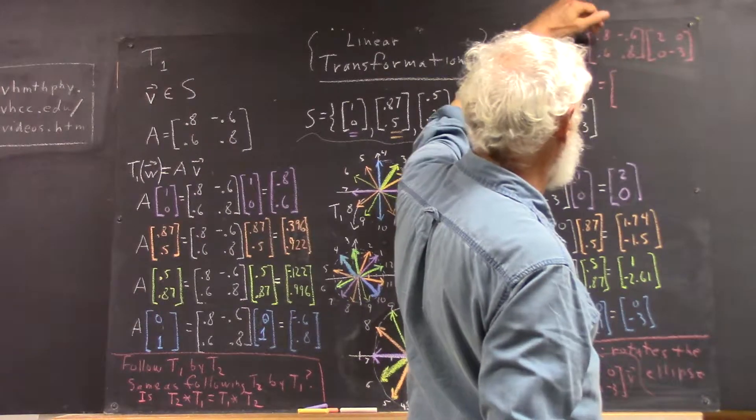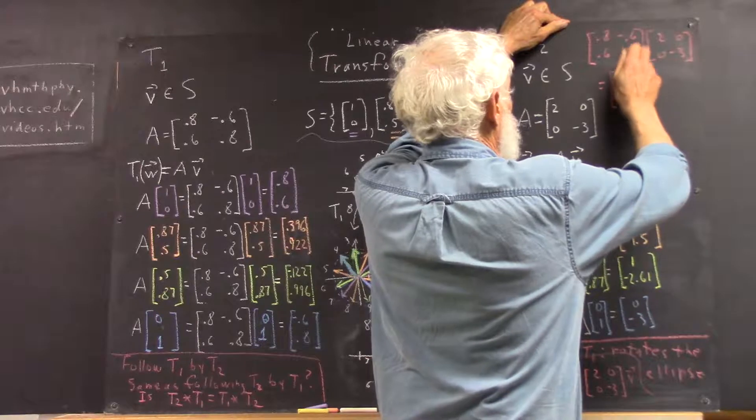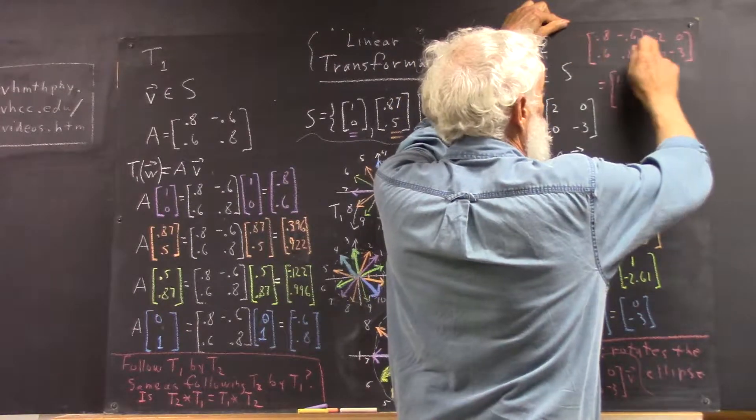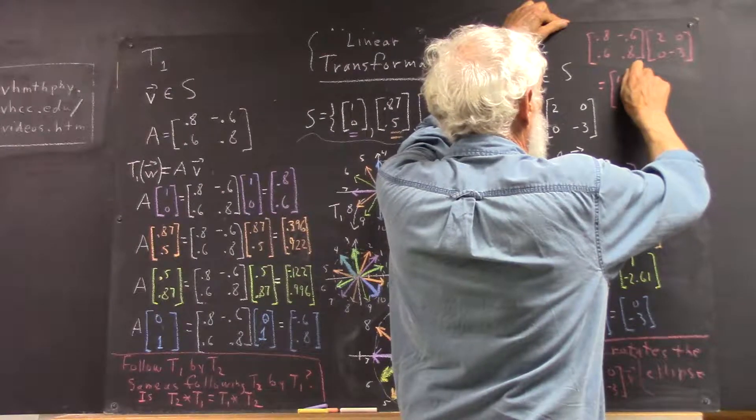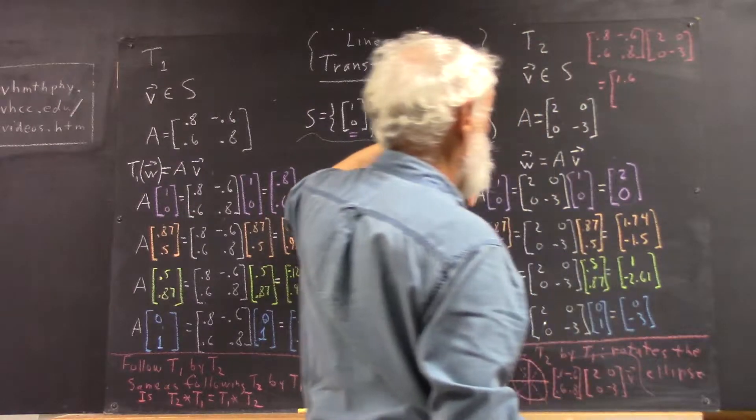Multiplying the first row by the first column, 0.8 times 2 is 1.6. And of course, negative 0.6 times 0 is 0. So when we do the first row by the first column, we get 1.6, and that goes in the first row, first column of our product matrix.